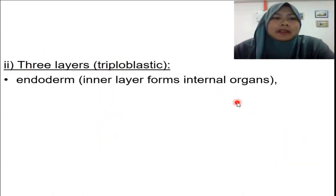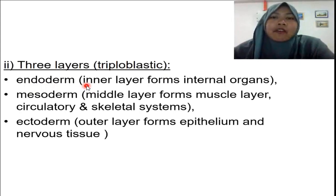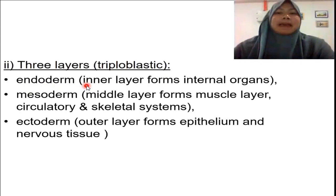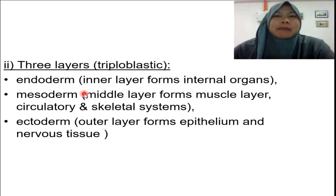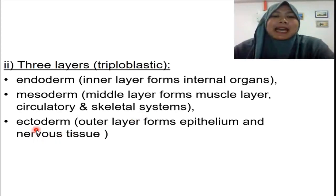Animals that have three layers of tissue are called triploblastic. Triploblastic means they have three layers: the endoderm, the innermost layer, which forms the internal organs; the mesoderm, the middle layer — remember M for middle, M for muscle — which also includes the circulatory system and skeletal system; and the ectoderm, the outermost layer, which makes up the epithelium and also the nervous system.